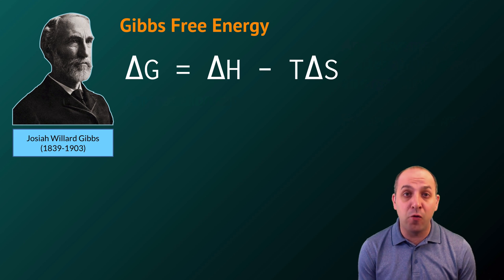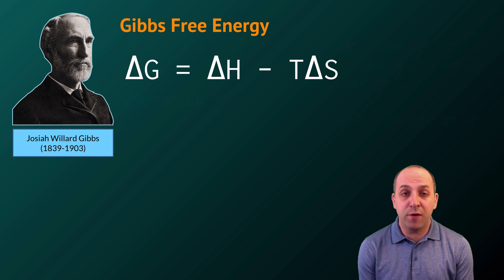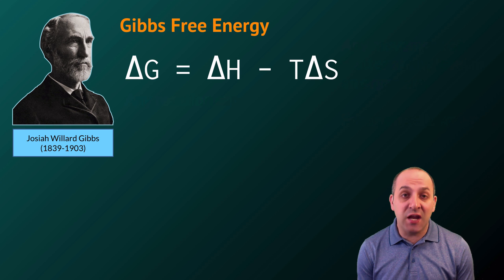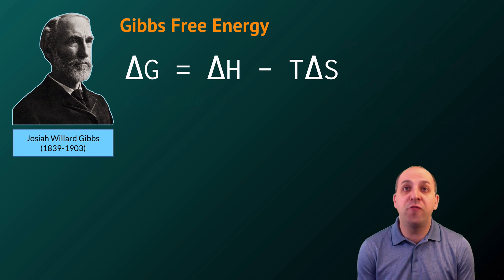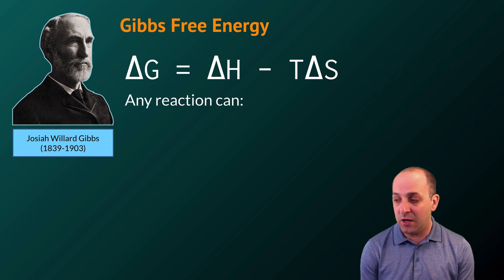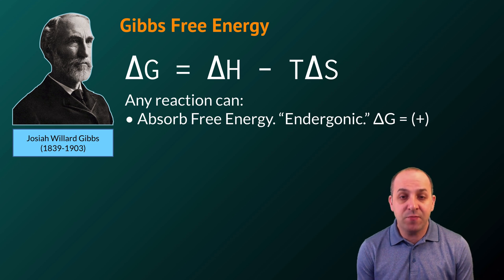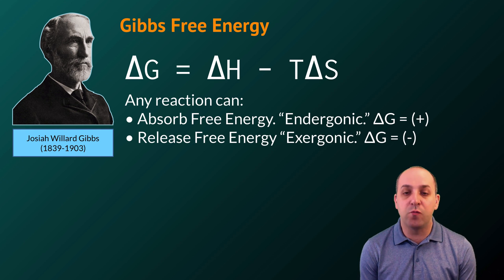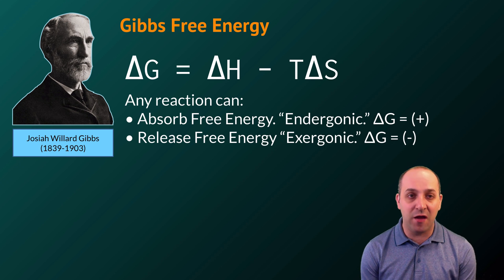Delta G is the thing we're most focused on. We're not really going to talk about calculating free energy here, but delta G is the change in free energy in the system. Any reaction we look at is going to do one of two things in terms of delta G: it could absorb free energy — that's what we call an endergonic reaction, where delta G has a positive value — or it could release free energy, which is what we call an exergonic reaction, where delta G has a negative value.